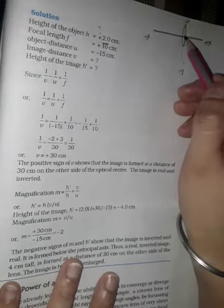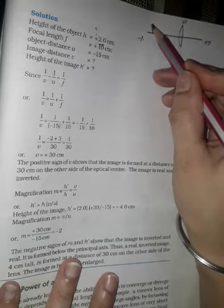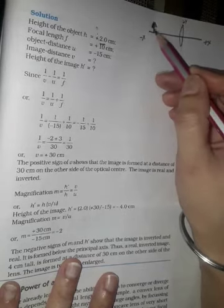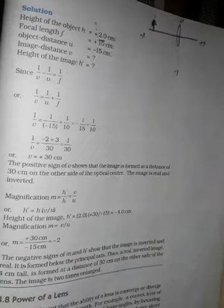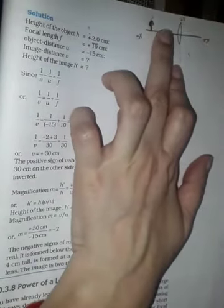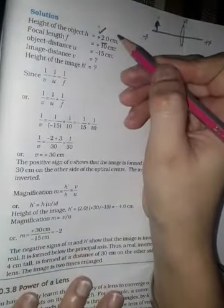Height of the object is how much? 2 cm. Now let's talk about the sign. If we make an arrow for the object height, we measure it upward. You measure it on the scale - if you measure upward, this is positive. Therefore, here is a positive sign.